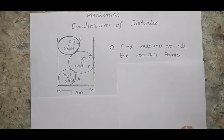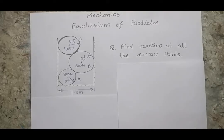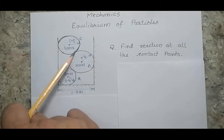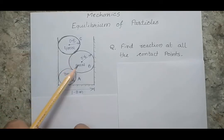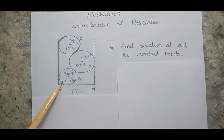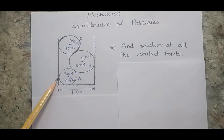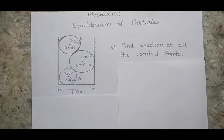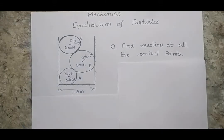Before starting the problem, understand how many contact points there are. For the top cylinder there are two contact points. For the second one there are three contact points. The last cylinder is in contact with this wall, with this wall, as well as with this cylinder.